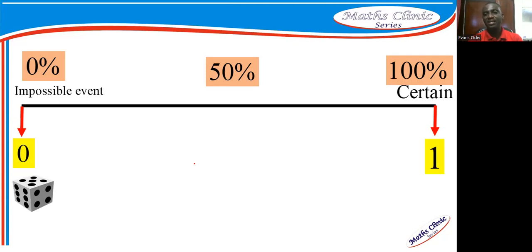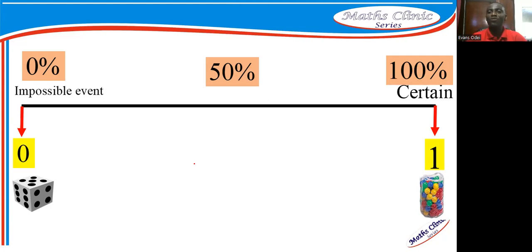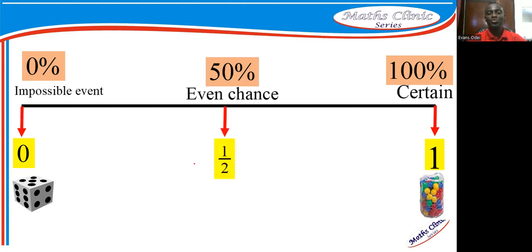When the probability is exactly one, we call it a certain event. For example, if a sack contains balls of different colors and I ask what is the probability of picking a colored ball — since everything inside is a colored ball, the probability is 100%, or one. As I sit here, unless I die, there is a 100% chance I will eat this morning — that is a certain event.